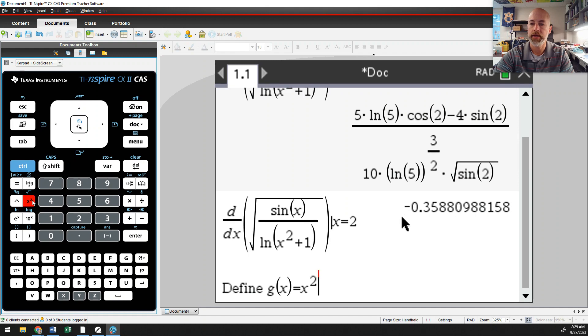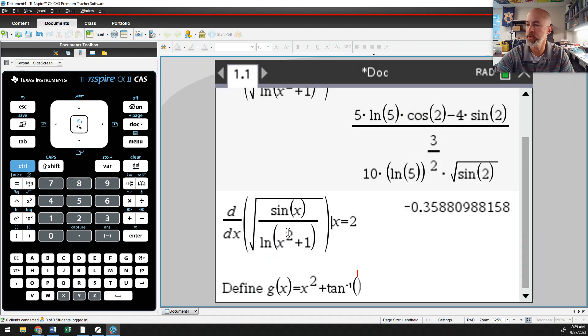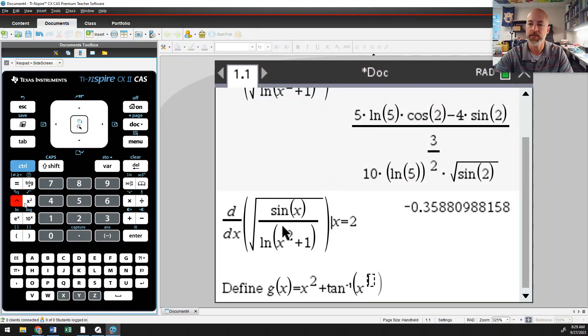x squared plus the inverse tangent. So open up the trig menu, inverse tangent of x cubed, x cubed, and you have to arrow out of the exponent. And I think it was minus e to the x. And make sure that for your e to the x function, you use the e over here next to the one. Do not use the e from the keyboard that confuses the calculator.